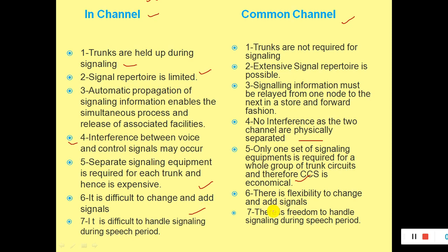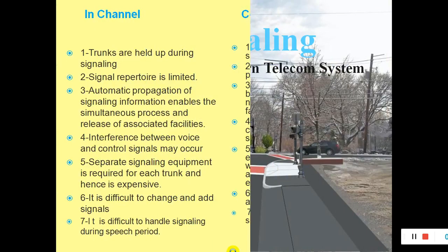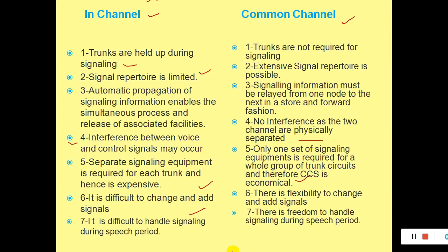In in-channel signaling, it is difficult to change and add signals because everything is fixed. In CCS, there is flexibility to change and add signals because speech and control are separate, and signals may be changed per the requirement. It is difficult to handle signaling during the speech period in in-channel because control signals experience speech signals on the same channel. In CCS, there is freedom to handle signaling during the speech period because both are going on different links. That was all about in-channel and common channel signaling — hope you got it. Please let me know if you have any questions. See you in the next one.